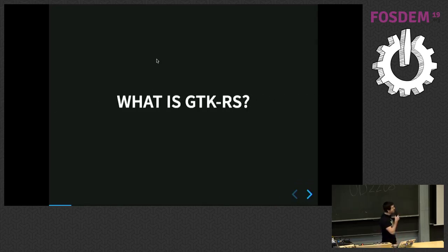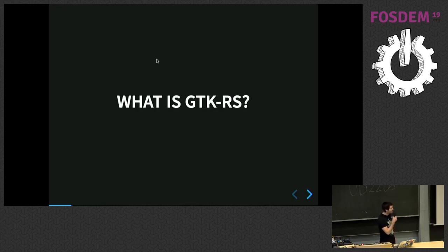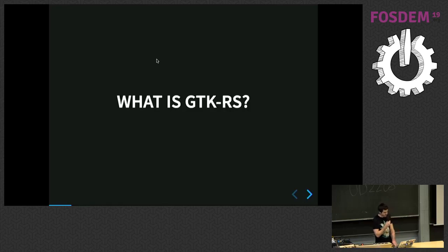So you have a pretty good idea of what gtk-rs is, but let's go over it again. The point of gtk-rs is to provide bindings for most GNOME libraries in Rust, of course. The point is to bring safety and more usability over C libraries directly in Rust.